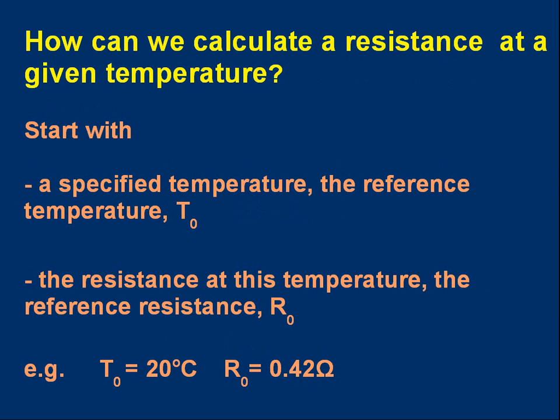How can we calculate a resistance at a given temperature? Well, we need some starting information. We usually call the temperature at which the initial resistance value is given, we call that temperature the reference temperature T₀. And we usually have a reference temperature and the value of resistance at that temperature. And the resistance at the reference temperature is called R₀, the reference resistance. Note that R₀ doesn't mean the resistance at 0 degrees. It means the resistance at whatever the reference temperature is. And usually, the reference temperature is 20 degrees C. That's a common practice.